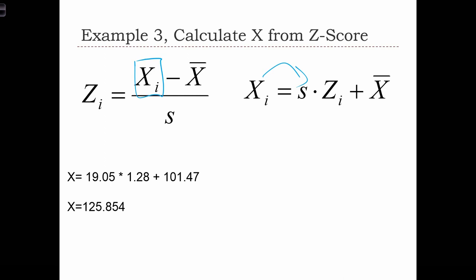In our case, x is unknown, so x equals s times z plus x-bar. S was 19.05, the z-score we just calculated was 1.28, and the mean precipitation was 101.47. That equals 125.854.